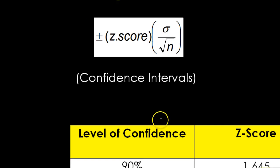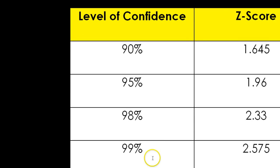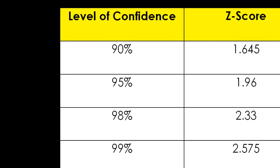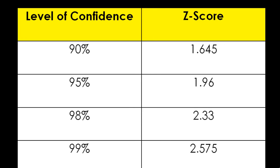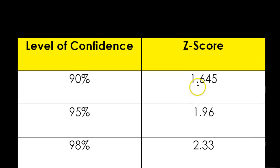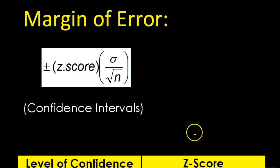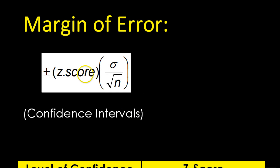The z-scores are just going to come from a table, so they will be given to you. If we want a 90% level of confidence, we'll use the corresponding z-score; 95%, a different z-score, and so on. We'll just be plugging these numbers right into the formula. Let's look at a couple of examples.